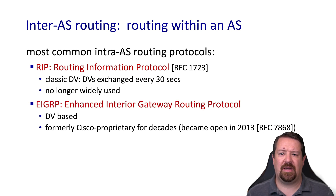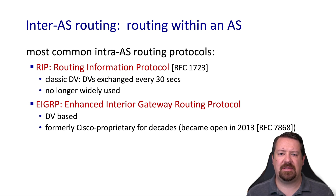We also have the EIGRP protocol, which was an evolution of the IGRP protocol. It is distance vector based, but layers a number of enhancements on top and was developed by Cisco. EIGRP has a number of mitigations for the issues found in RIP and so is able to scale to larger networks, but it is still fundamentally distance vector based and comes with the associated limitations.